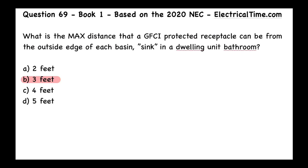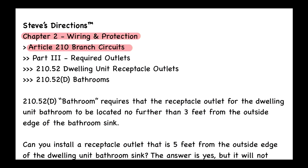One section is GFCI protection, which is 210.8. The other covers the maximum distance, found under a different section of Article 210. That maximum distance is found in Part 3, called Required Outlets, specifically 210.52 for dwelling unit receptacle outlets, and then 210.52(D) for bathrooms.